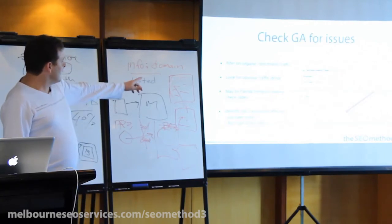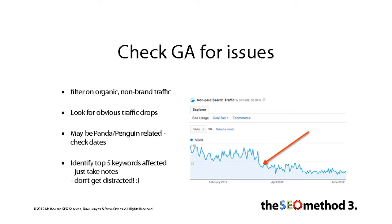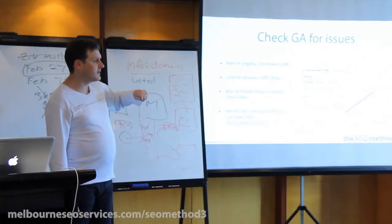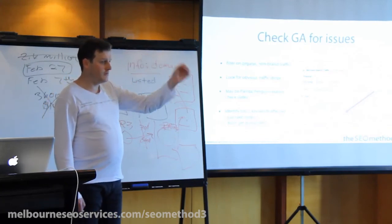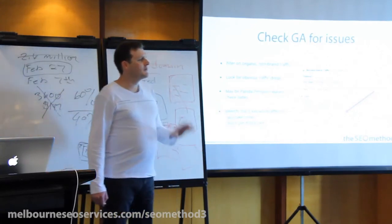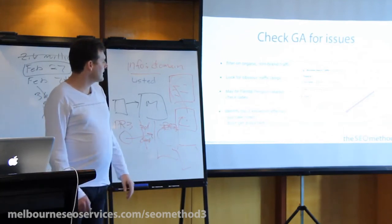When we're looking at analytics, like I talked about earlier, filter on the organic non-brand traffic and look for the obvious traffic drops. So we want to look for organic non-brand traffic — take out the customer's brand and look for the obvious drops, so we can see it nice and clearly. End of Feb, I think there's another drop about there. So they've got some problems there. It could be Panda or Penguin related — we'd go and check the dates in SEO Moz and note that it was probably affected by Panda or Penguin. And identify the top keywords that have been affected, just so we know what the general problem is that's hit the site.